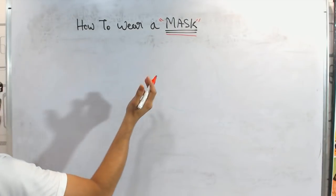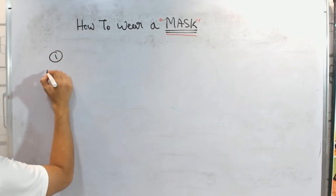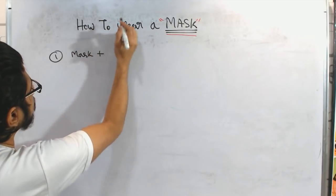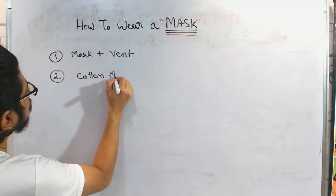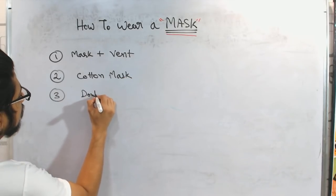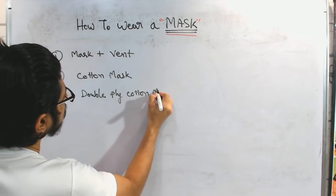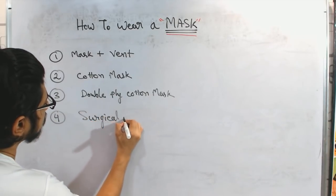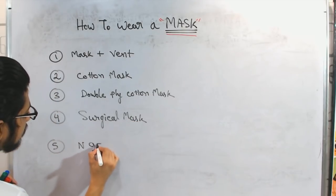And the second thing is how to wear the mask. There are different types of mask that I will be talking about and the grading will start from here. This is the mask with a vent. The second one we will write as a cotton mask. The third one we use here is a double ply cotton mask. And the fourth type is a surgical mask. And the fifth type I will write as an N-95 mask.